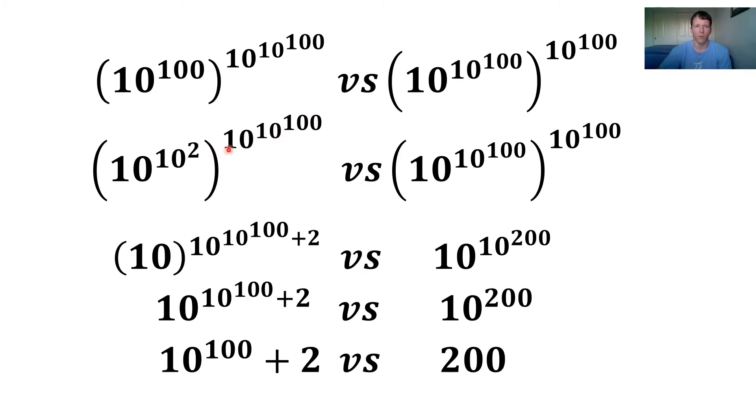So the rule for multiplying exponents is you just add these exponents. So we just add 2 to a googol and that's what you get here. So this exponent is 10 to the googol plus 2. And over here, we do the same rule. When you raise an exponent to a power, you just multiply the exponents. So this is a googol times a googol and a googol times a googol. You just add these exponents, you get 10 to the 200.